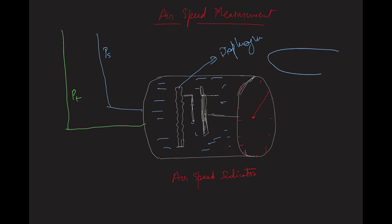The diaphragm is a corrugated disc-like thing which is hollow from inside. The total pressure line is directly connected to the diaphragm and total pressure enters the diaphragm. So inside the diaphragm we have total pressure.